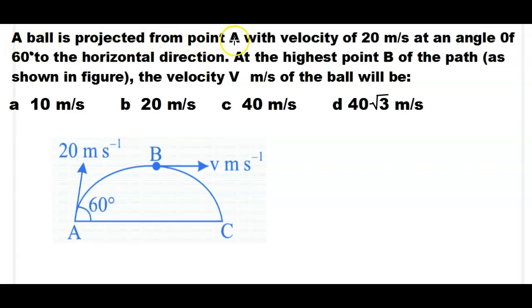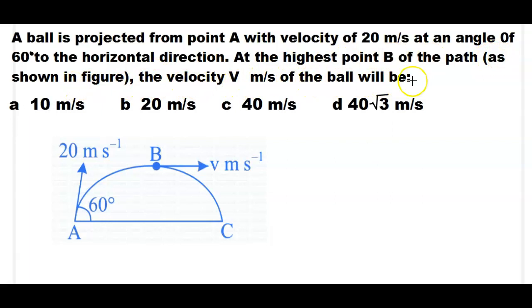A ball is projected from point A with a velocity of 20 meters per second at an angle of 60 degrees to the horizontal direction. At the highest point B of the path, as shown in the figure, the velocity V_B in meters per second of the ball will be?